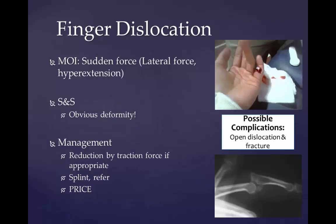Finger dislocation is a common injury that occurs when the bones of the finger are moved from their normal position. It can occur in any of the finger joints, but most often in the middle knuckle of the little, ring, middle, and index finger. A dislocated finger is caused by a jamming force applied to the end of the finger, or the finger may be forcefully overextended. During sports, a basketball or baseball may strike the tip of an outstretched finger, a finger may get caught in equipment, or a player may fall onto an outstretched hand. A dislocated finger is usually obvious.